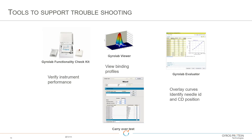To summarize, there are several tools to support troubleshooting: the Gyrolab functionality check kit; the viewer and interpreting viewer profiles, discussed in the previous podcast; the carryover tests we covered today; and within your Evaluator report, you can overlay curves, identify needle IDs, and use that to help troubleshoot various analytical problems you might encounter when running assays.